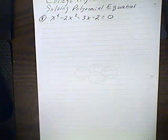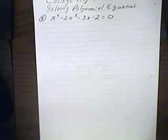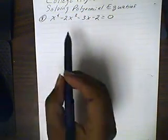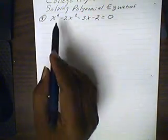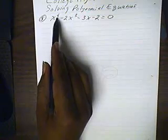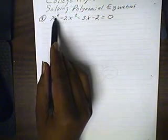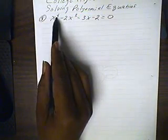College algebra, Topic 4.2: solving polynomial equations. We're going to solve this polynomial equation. First, we'll notice that it's to the fourth power — the highest power is four.